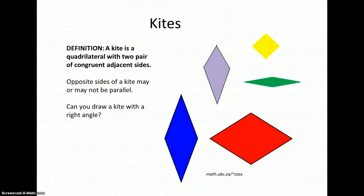A kite is a quadrilateral with two pair of congruent adjacent sides. This time we're not talking about parallel opposite sides. We're talking about adjacent, or two sides that are next to each other. If you consider the purple kite here, the traditional kite shape when we fly it, notice that the two top sides are the same length, and the two bottom sides are the same length.